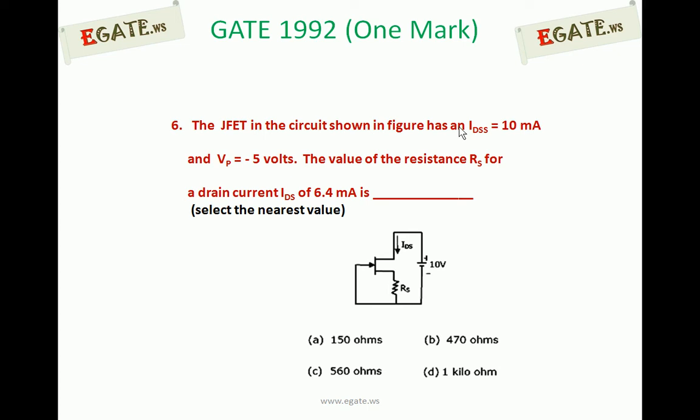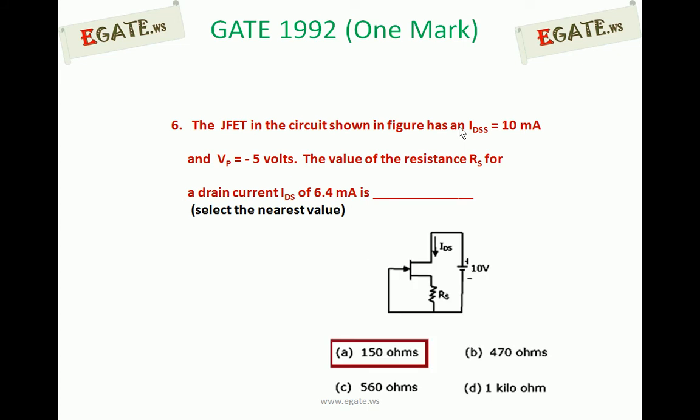We need to choose the value of RS such that the drain current flowing through that JFET is 6.4mA. The given information is IDSS is given, pinch off voltage is given. So to achieve IDS of 6.4mA, what must be the value for RS? Choose the nearest value if you are not getting the exact one. Correct option for this one is A, 150 Ohms.